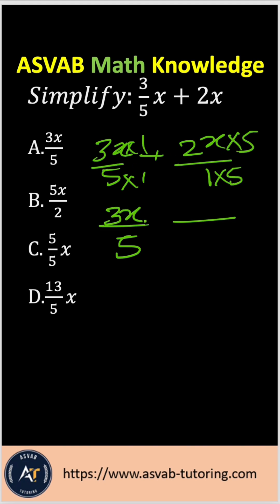That gives you 3x over 5 plus 10x over 5, since 5 times 2 is 10x. To add them, you add only the numerators, which gives you 13x over 5.